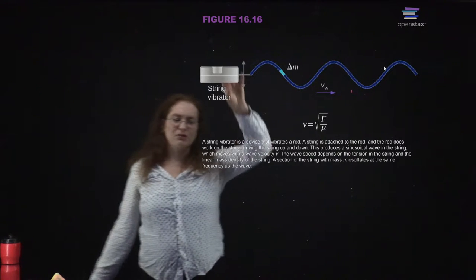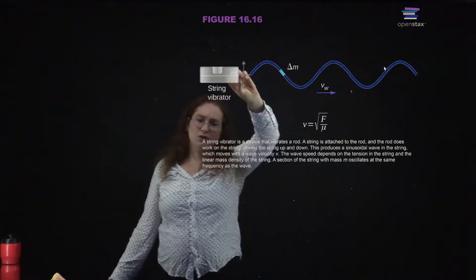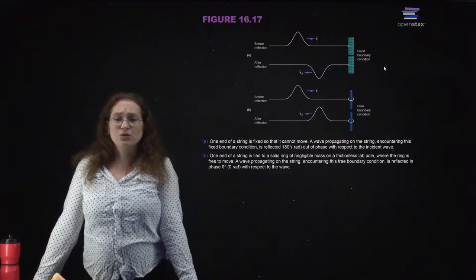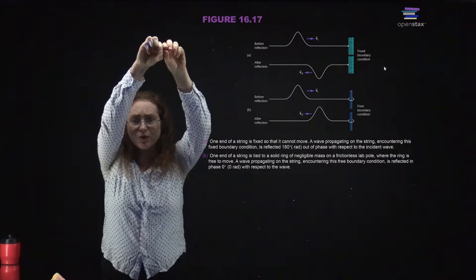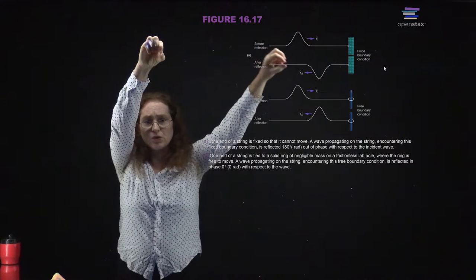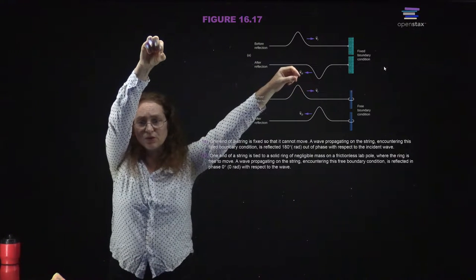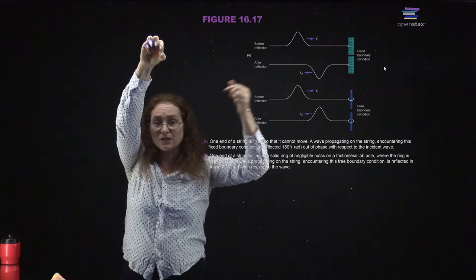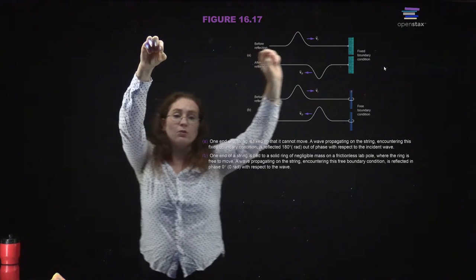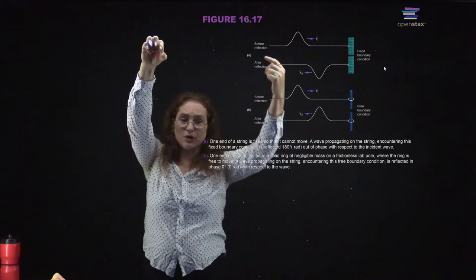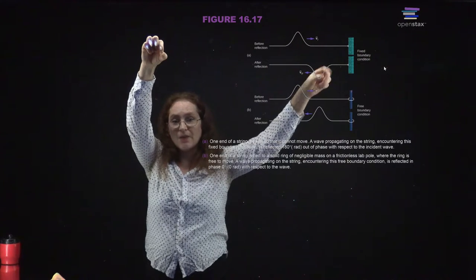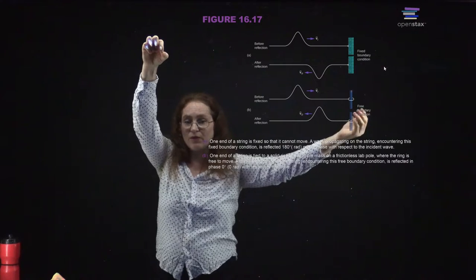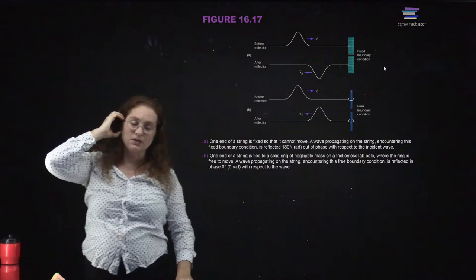When you excite the string, you're only exciting one frequency and you will see the wave move along the string. You can also do this with pulses — you just pluck it and it moves in one direction, then reaches a boundary and reflects. If you have a fixed boundary, when the wave bounces off, the amplitude of the displacement has the opposite sign. If you have a free boundary where the end can move up or down, when the wave reflects, it keeps the same sign.